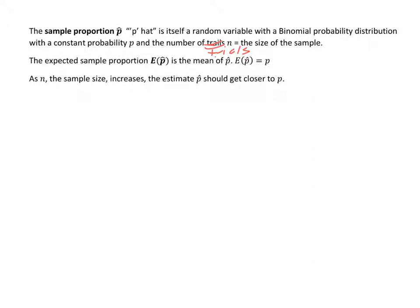The expected sample proportion E of p hat is the mean of p hat, so we expect it to be p. As n, the sample size, increases, the estimate p hat should get closer to p.